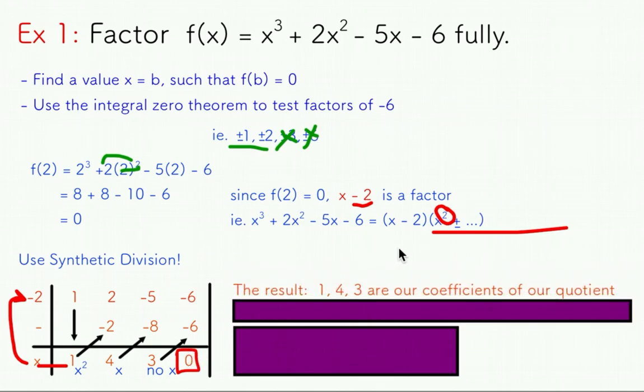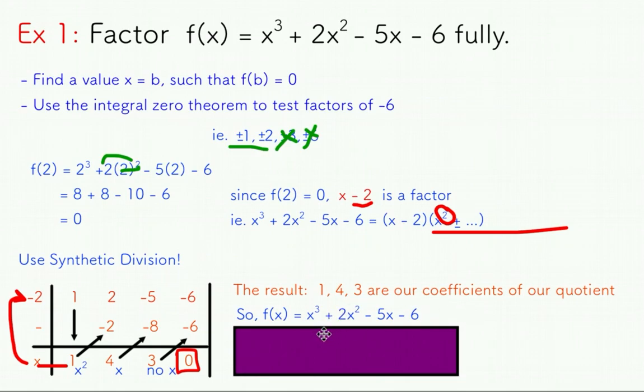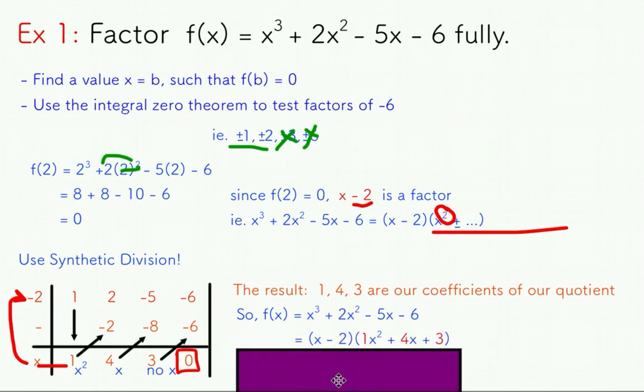So I can represent that by saying, the results 1, 4, 3 are our coefficients of our quotient, which is just the result of our long division problem. And so what I can say is that our original polynomial can be expressed as the factor that I chose times the quadratic that I ended up with as a result of my synthetic division.